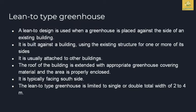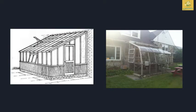The first type is the lean-to type greenhouse — a greenhouse placed against an existing building, using it for one or more of its sides. The roof of the building is extended with appropriate greenhouse covering material and the area is enclosed, typically facing the south side. Lean-to greenhouses are limited to a single or double width of 2 to 4 meters maximum.